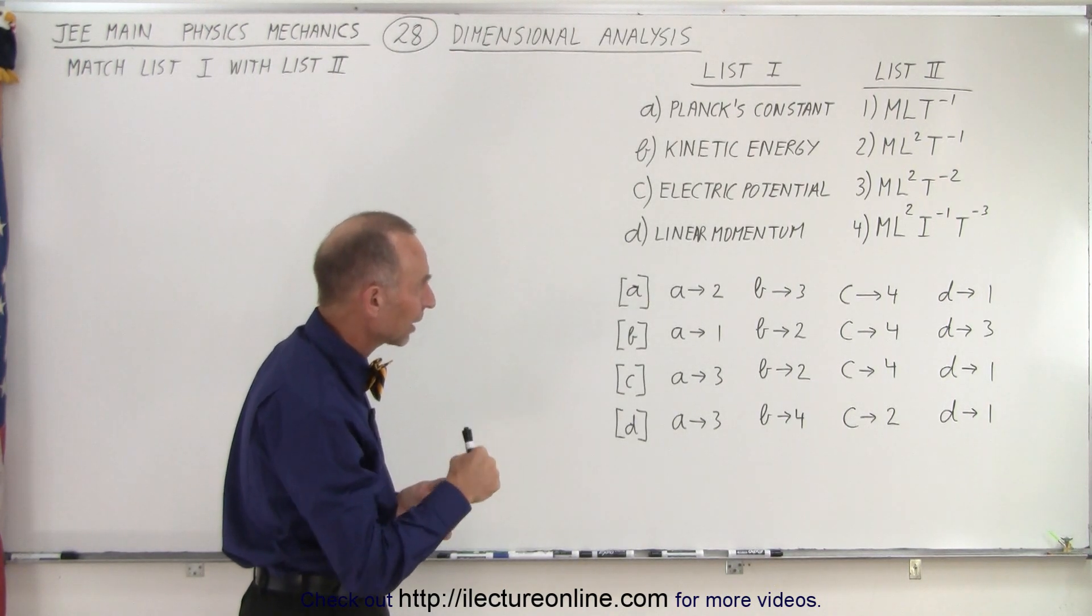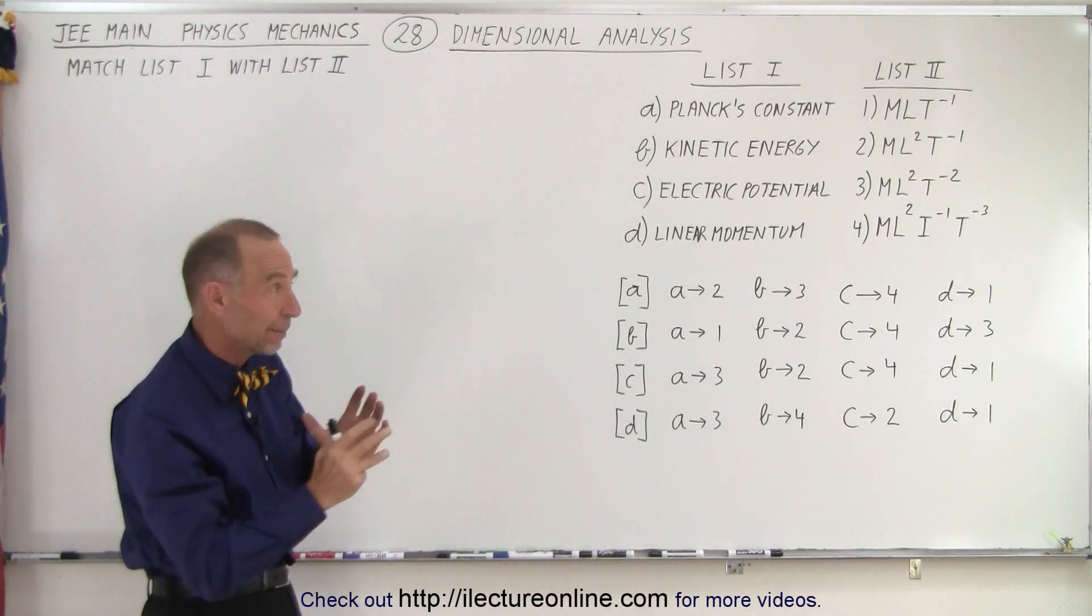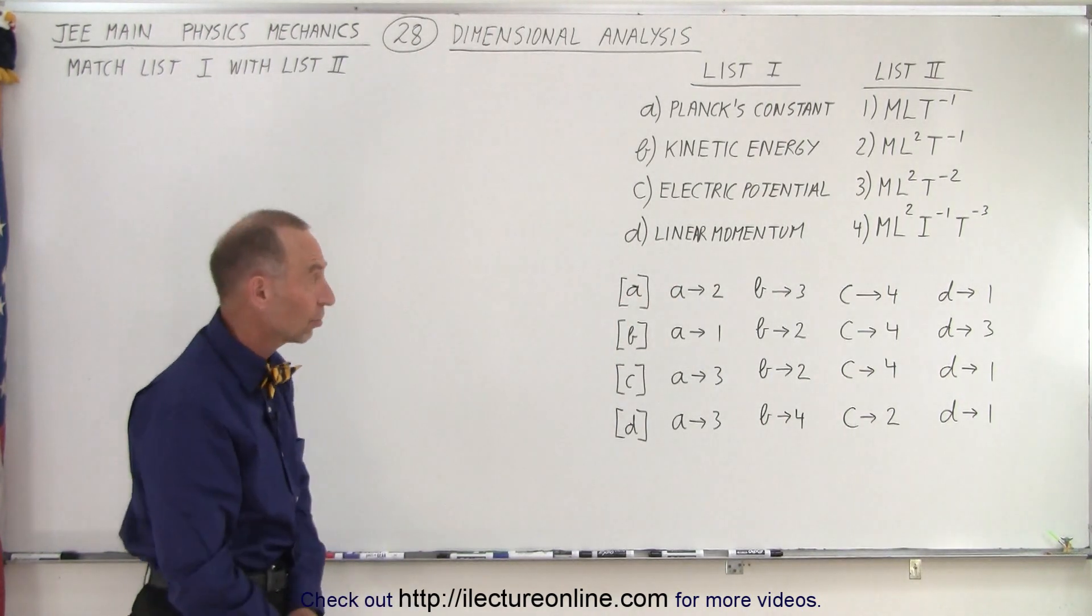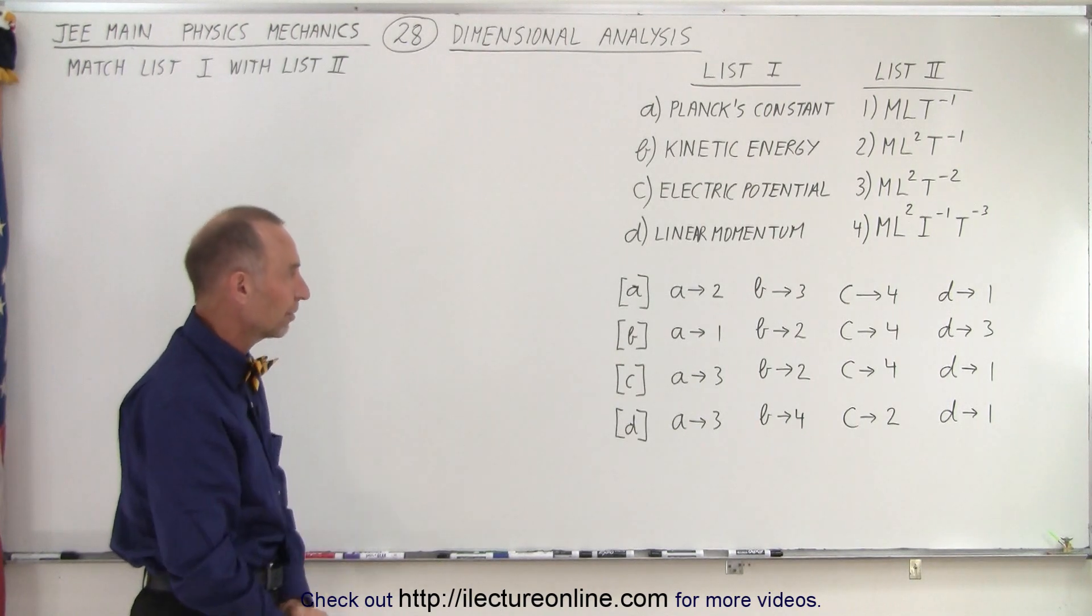I to the negative 1 T to the negative 3, and that I means current, that may not be apparent when you see it. And then we have four combinations. One of those combinations is correct where we're matching an item on the left side with an item on the right side.